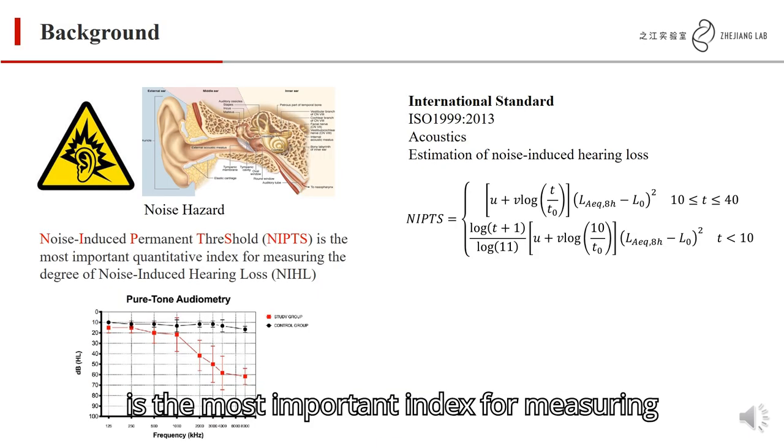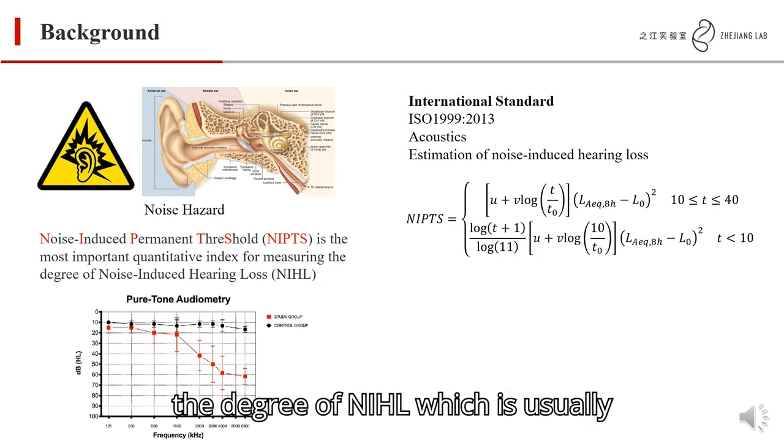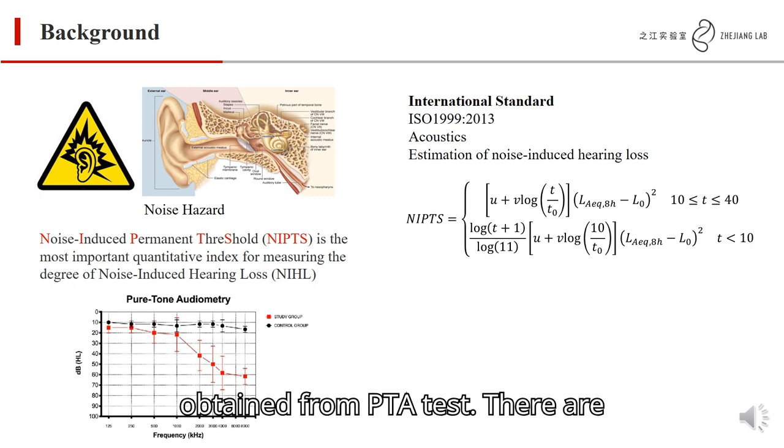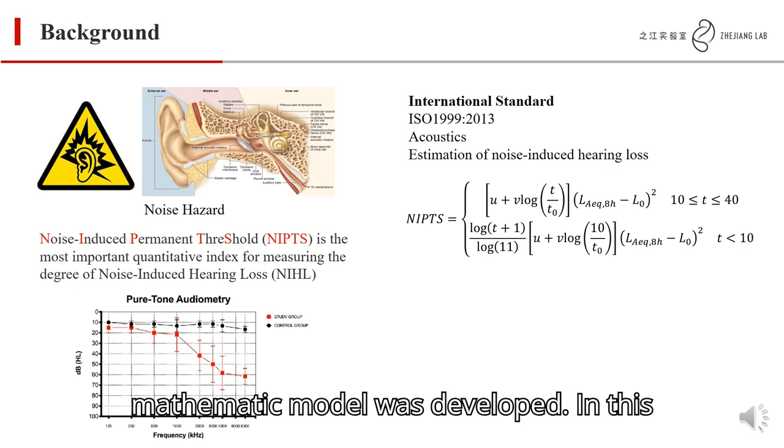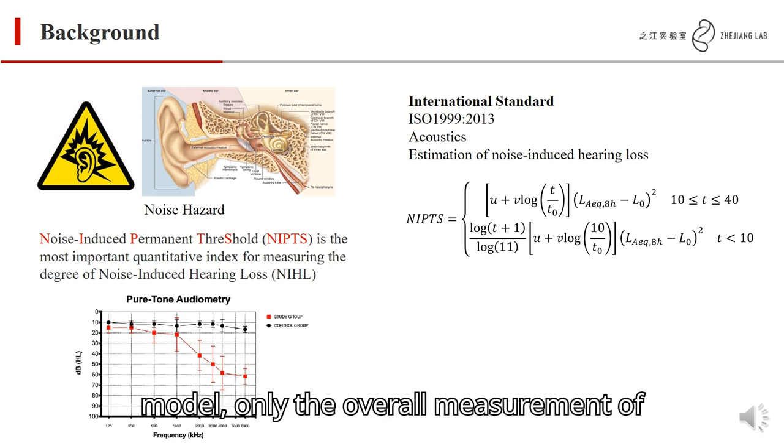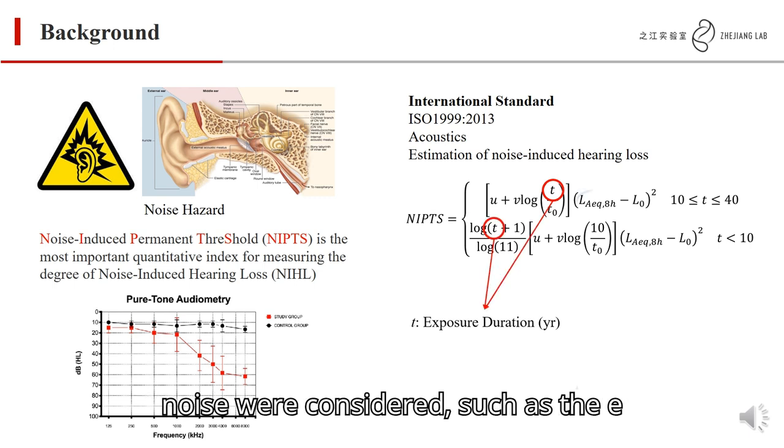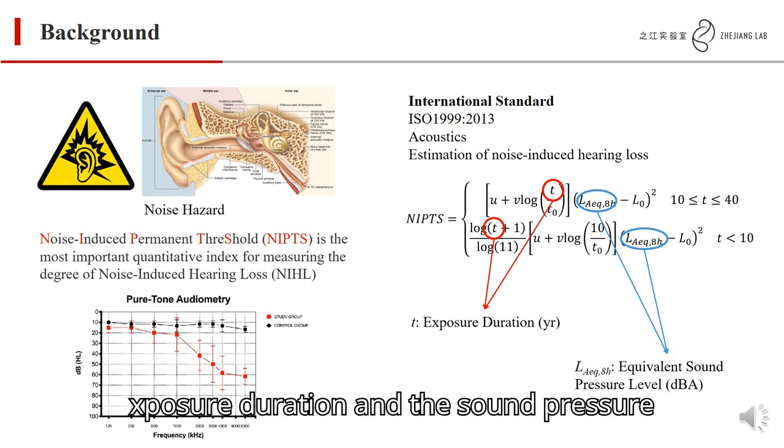NIPTS is the most important index for measuring the degree of NIHL, which is usually obtained from PTA test. There are several models to predict NIPTS. For example, in ISO, a mathematical model was developed. In this model, only overall measurements of noise were considered, such as exposure duration and sound pressure level.